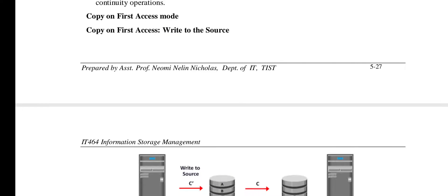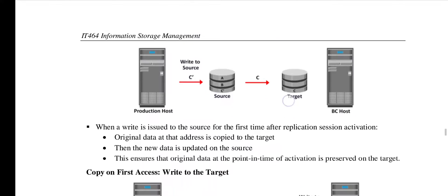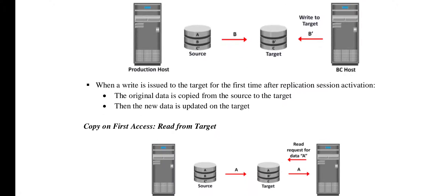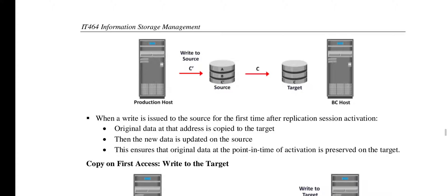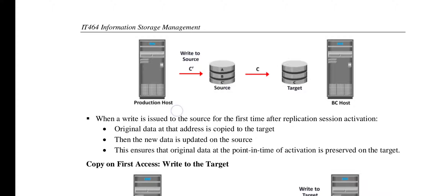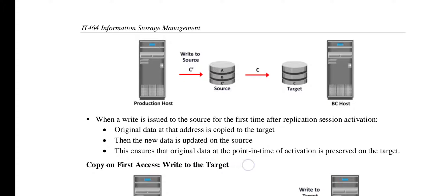Now for copy-on-first-access (COFA), we discuss write to source, write to target, and read from target. For write to source: when a write is issued to the source for the first time after replication session activation — say the source has A, B, C and the production host issues a write of C-dash — the original data at that address (C) is copied to the target first, then the new data is updated on the source so C becomes C-dash. This ensures the original data at the point of activation is preserved on the target.